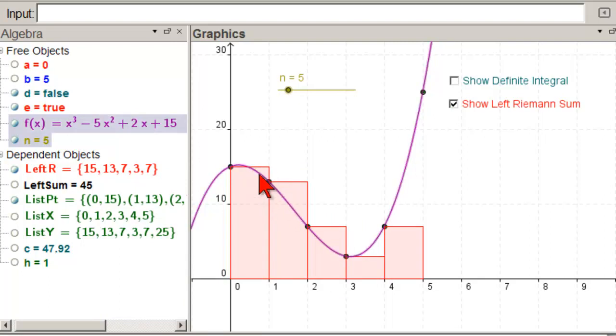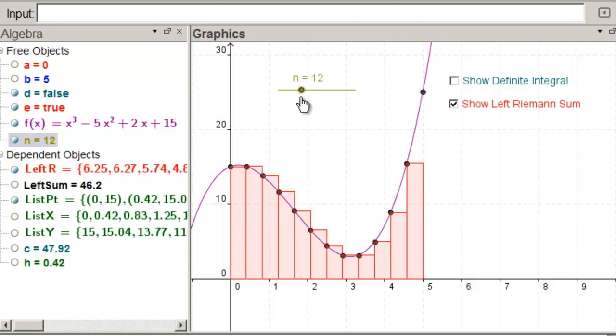Here's the left Riemann sum, so we can see we're getting too much here, and not enough here, and definitely not enough there. And as we increase the step size, we can see that we're getting better and better.